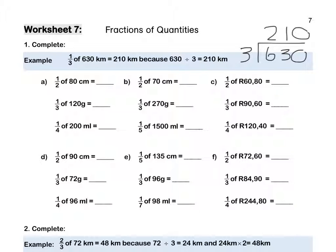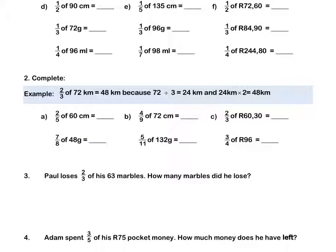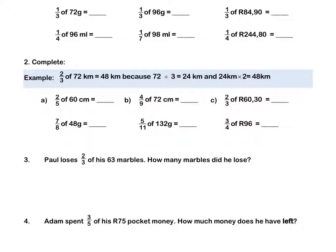Pause this video to complete Question 1 by yourself. Use the memo to mark your answers when done. Question 2. Two thirds of 72 is 48 kilometres, because 72 divided by 3, after doing a division sum on the side, gives an answer of 24 kilometres, and 24 kilometres times 2 is 48 kilometres.